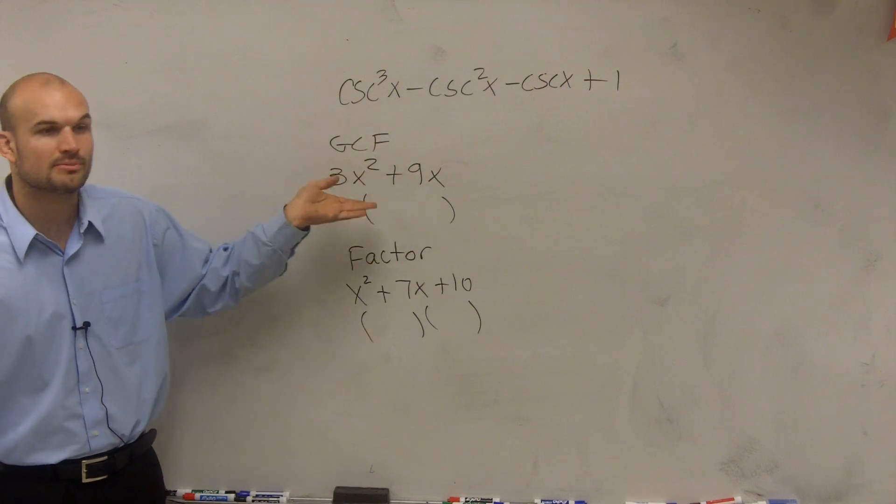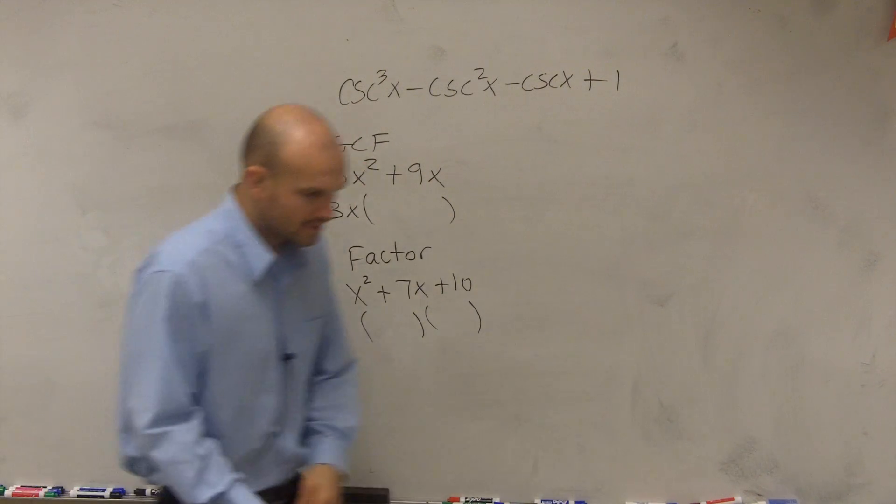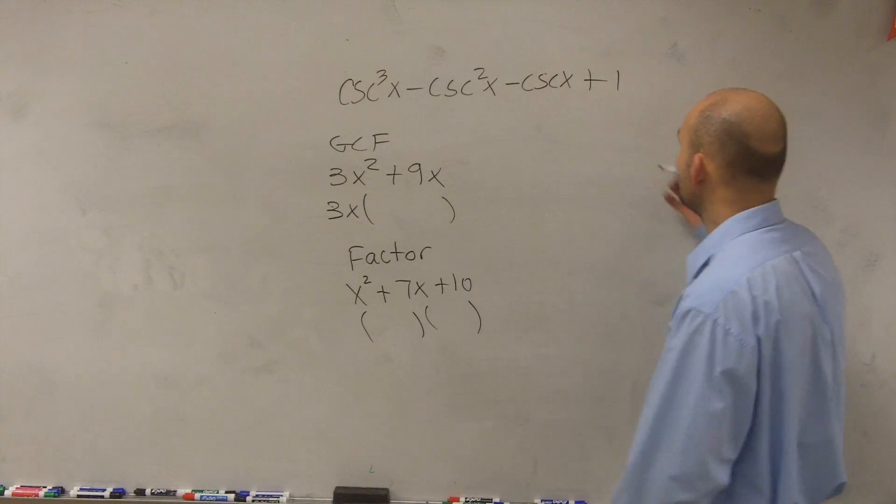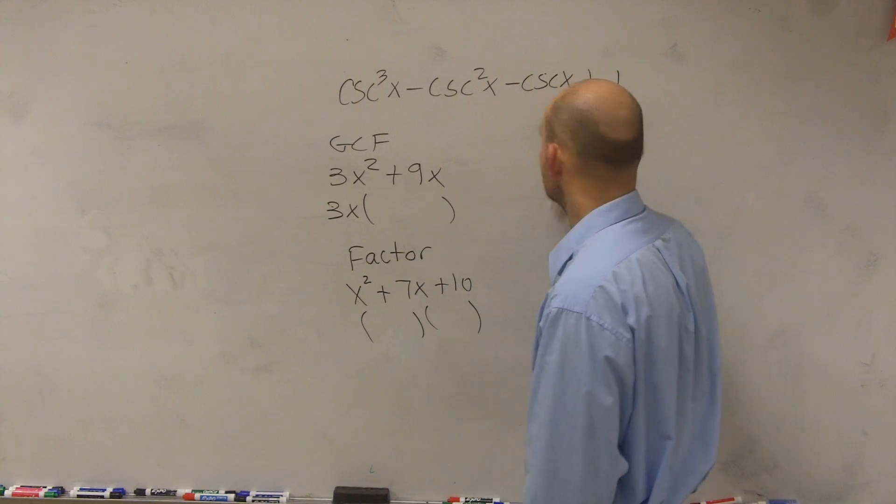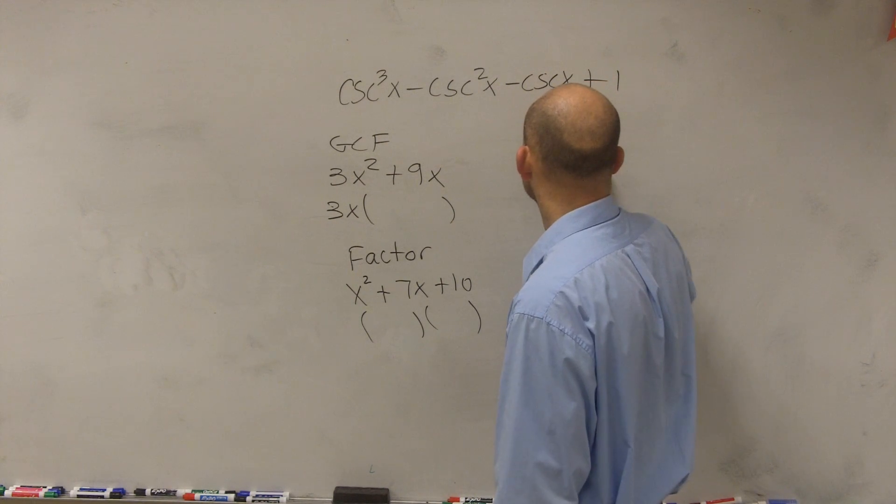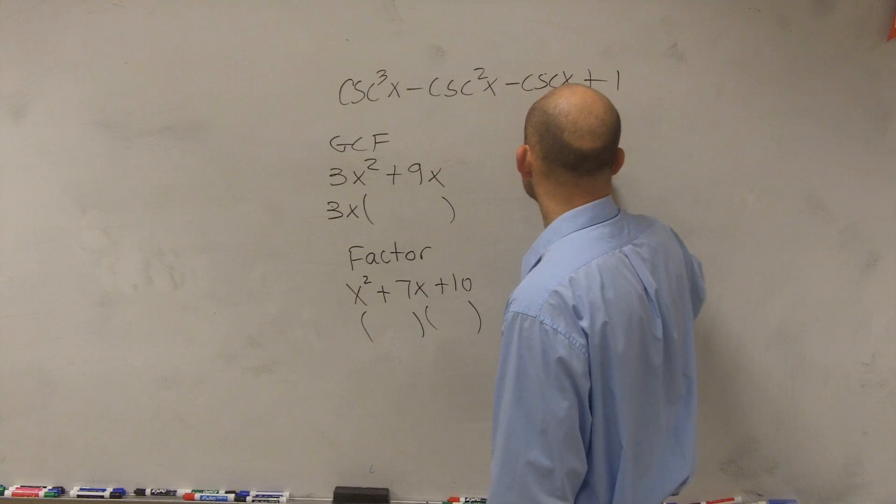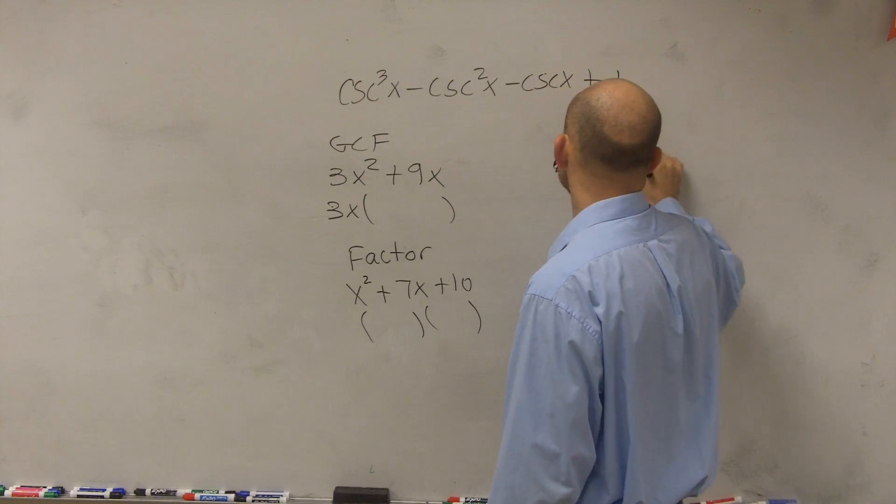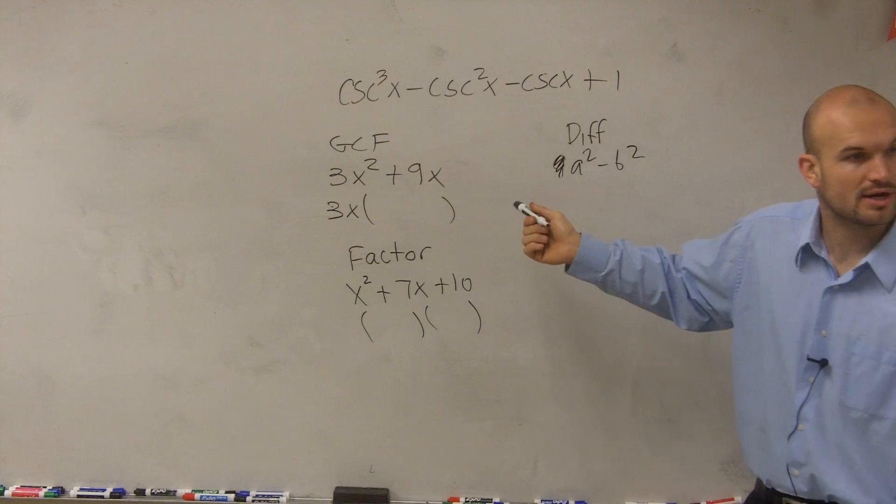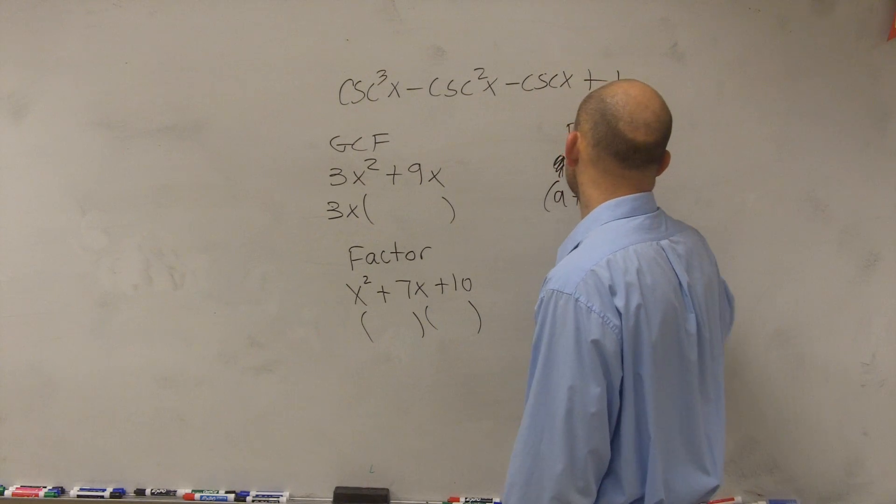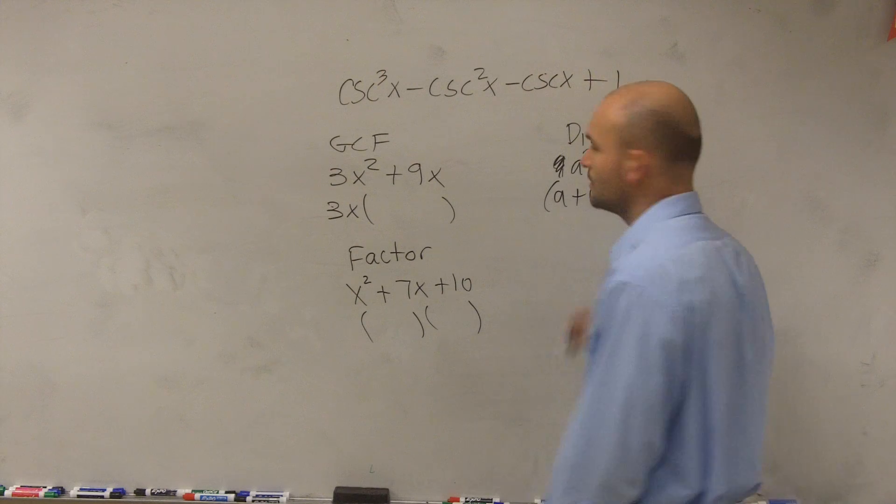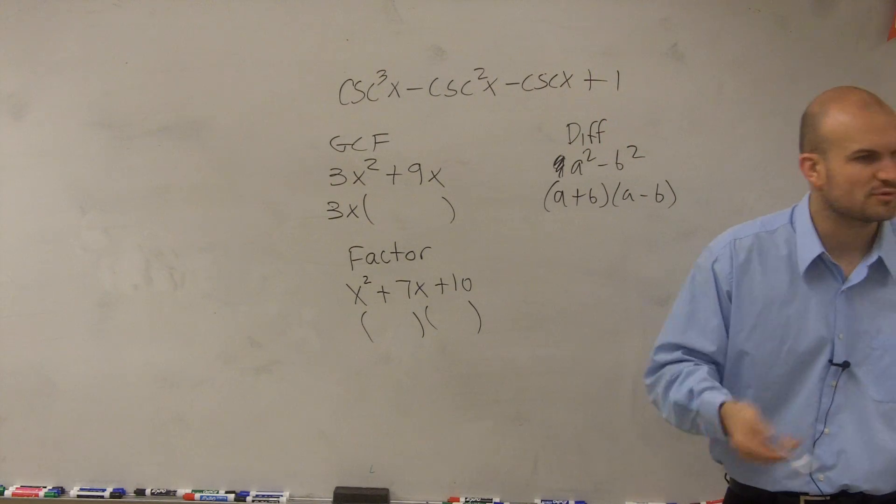Here's factoring. It could be any polynomial, but you factor out the GCF. Then there's a couple special terms where maybe we had the difference of two squares, where you had like a² - b². Whenever you had a squared term minus another squared term, you could factor it into (a + b)(a - b). So we look for a difference of two squares.